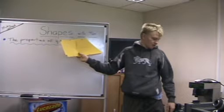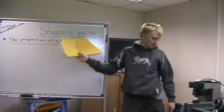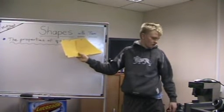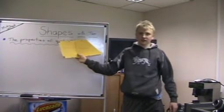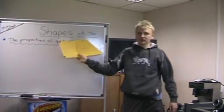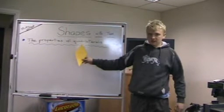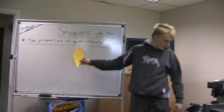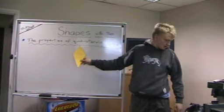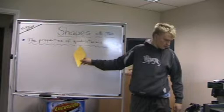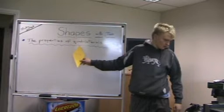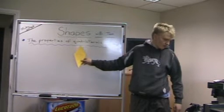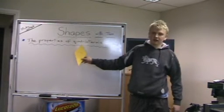Not all quadrilaterals have parallel sides. This is a kite shape. A kite has got two pairs of sides next to each other that have equal length, but none of the sides are parallel.